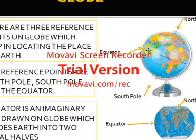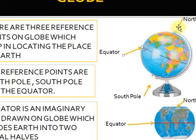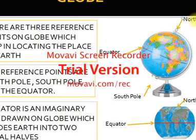The first reference point is the Equator, which is shown as the blue line. The Equator is an imaginary line. The second reference point is the North Pole and the third is the South Pole.